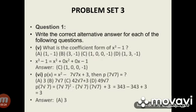Subdivision 5: What is the coefficient form of x cubed minus 1? The index form of x cubed minus 1 is x cubed plus 0x squared plus 0x minus 1, and therefore the coefficient form is (1, 0, 0, 0, -1). The answer is option C.